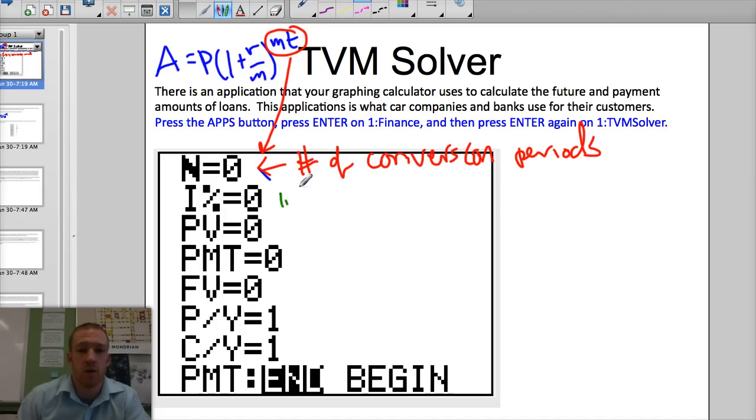This is your interest rate as a percentage. So if it was 8%, you'd actually put an 8 here. This is your starting amount. PV stands for present value.